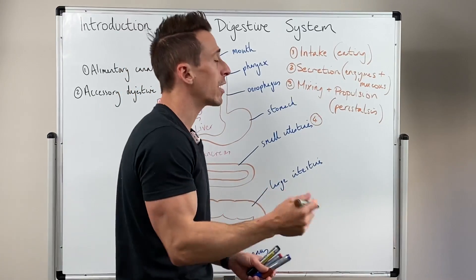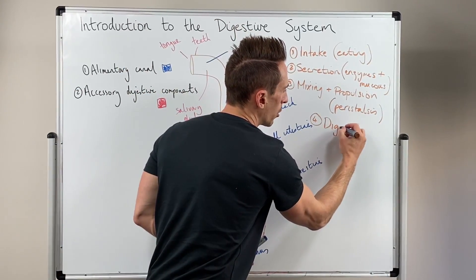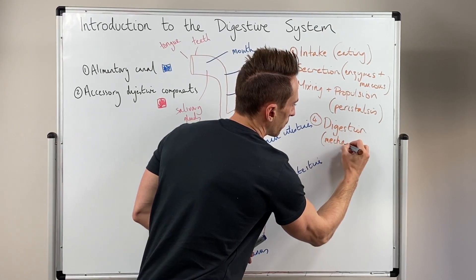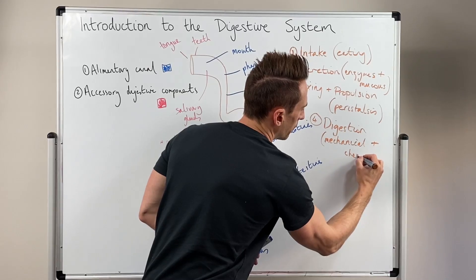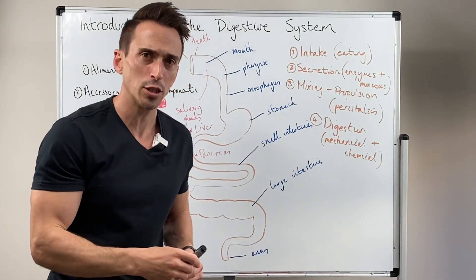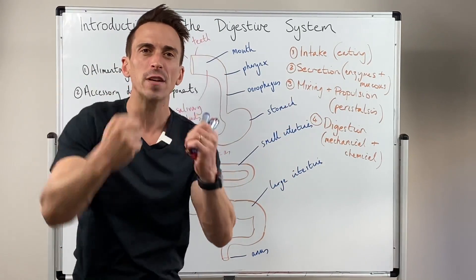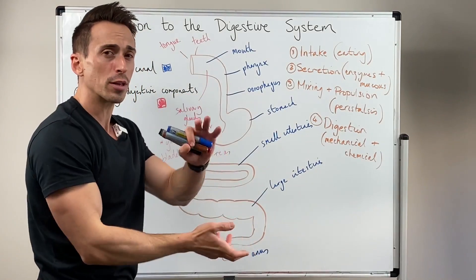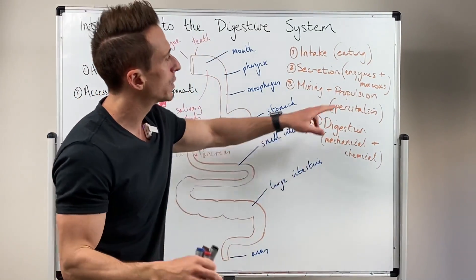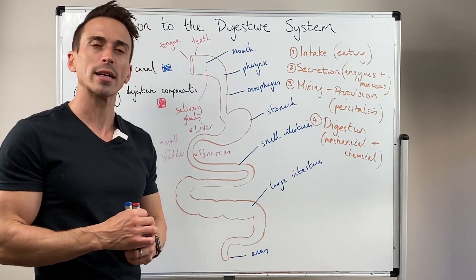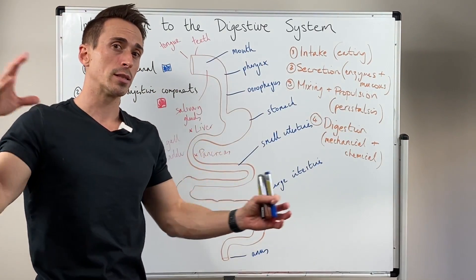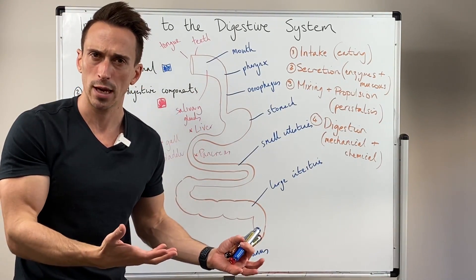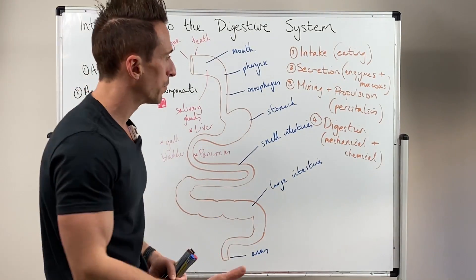Number four — another function of the digestive system — is digestion. We can't forget that primary role. Now importantly, you've got both mechanical and chemical digestion. Mechanical is physical digestion — that's actually part of the mixing and propulsion process, where we physically tear things apart. Our teeth and tongue break things apart, and our stomach can throw things around — that's mechanical digestion. Chemical digestion involves enzymes secreted from the digestive tract. They're molecular scissors that chop up big carbohydrates, triglycerides, and proteins into their smaller components: glucose, galactose, and fructose; fatty acids and glycerol; or amino acids, respectively.